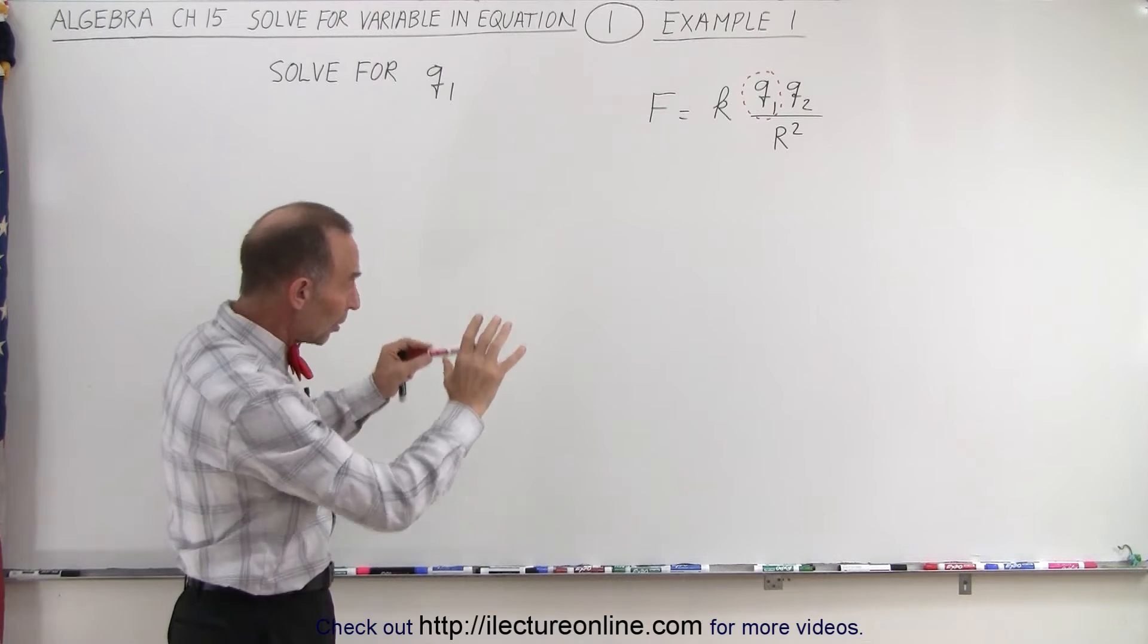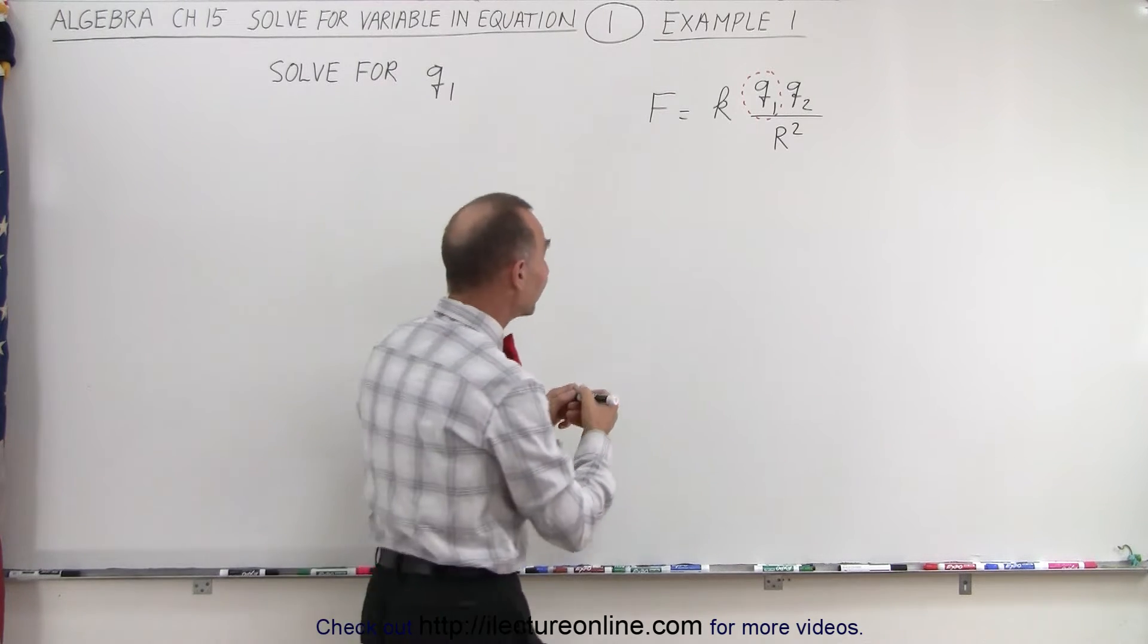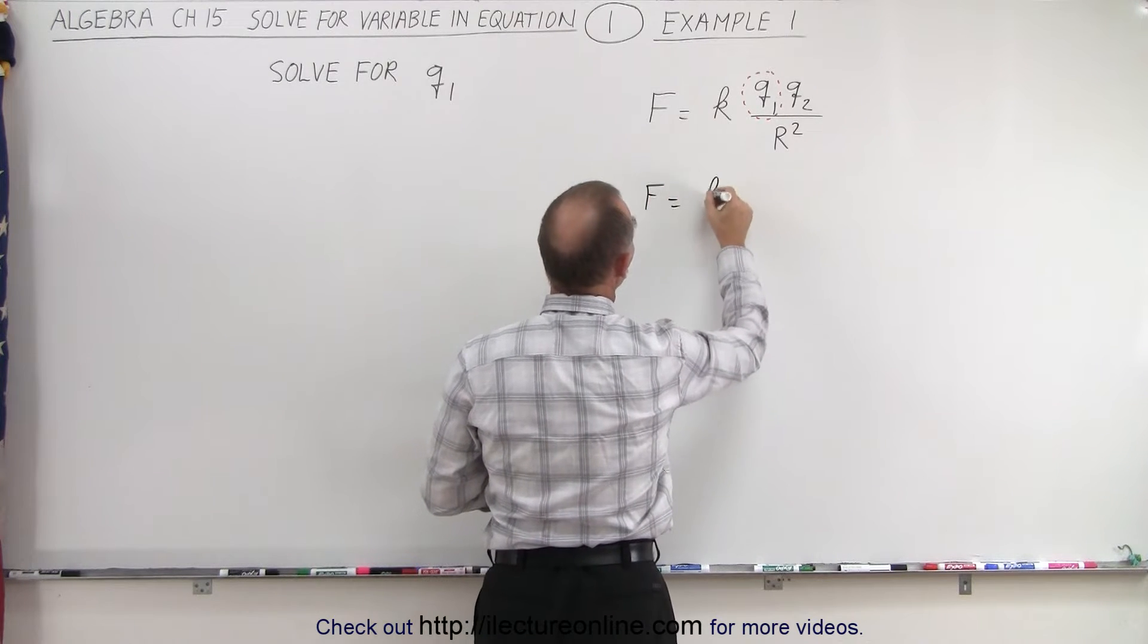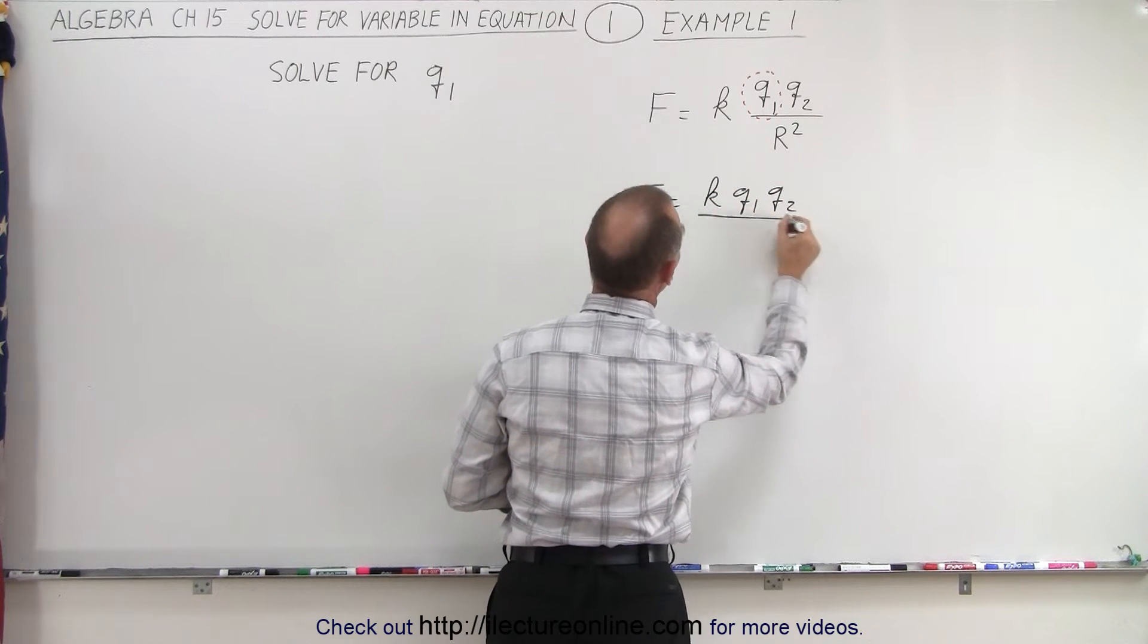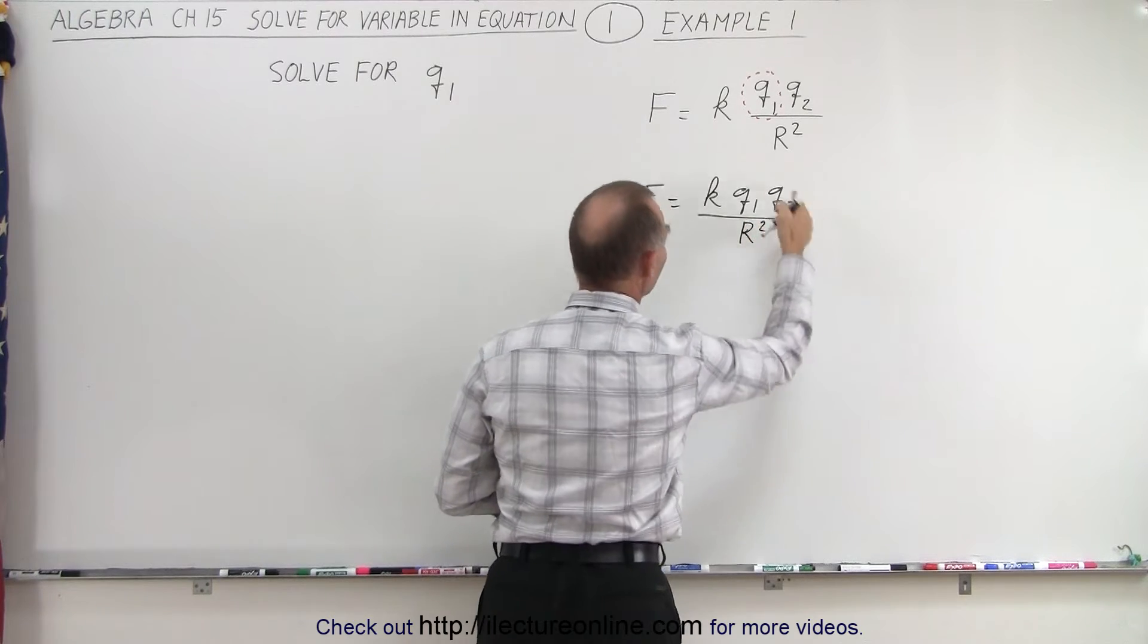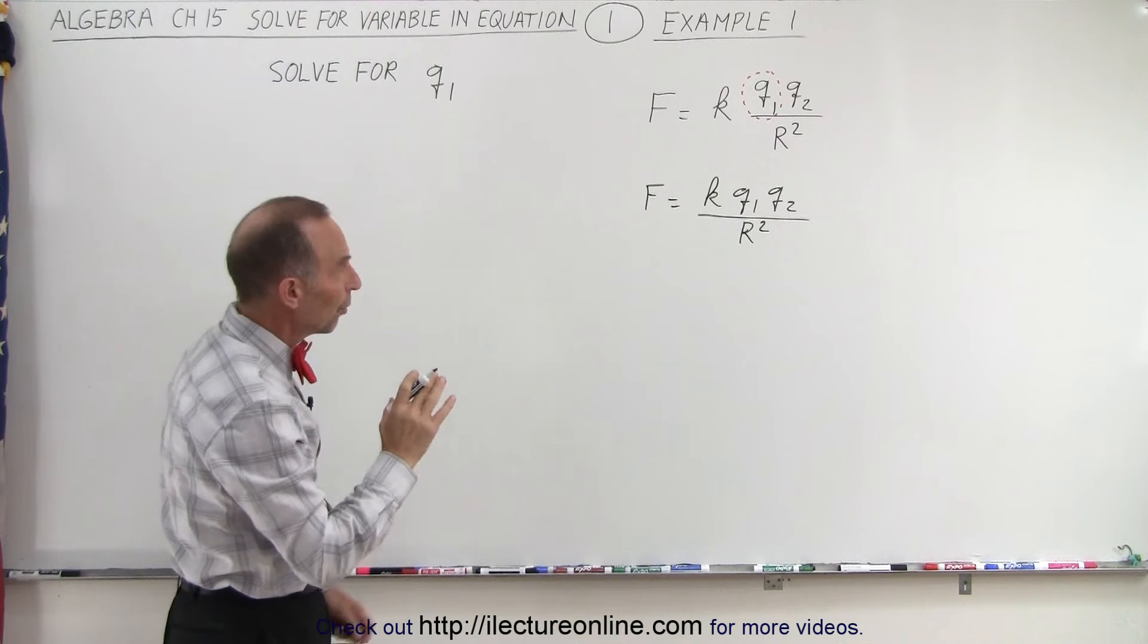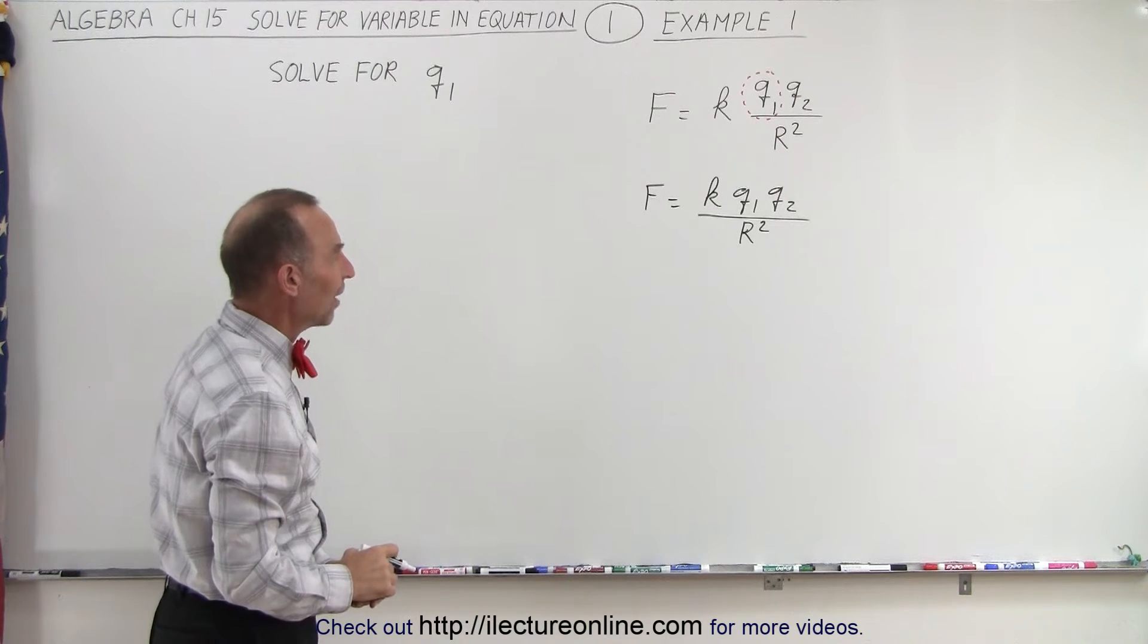Now, since everything is multiplied and divided on the right side, we can rewrite the right side as follows. We can write this as F equals KQ1Q2, all in the numerator, and then divide it by R squared. So that's exactly the same as that, except now I've taken K and I wrote it in the numerator of a fraction there.